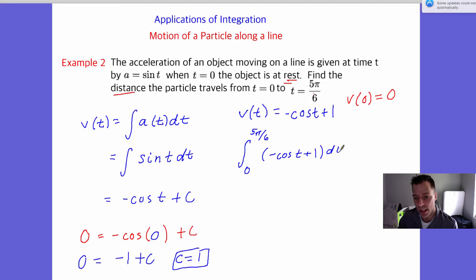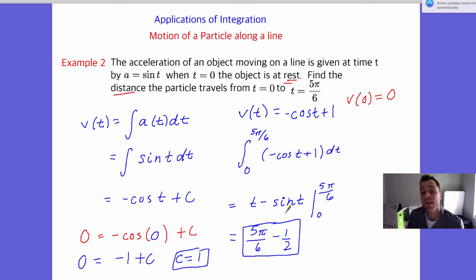Now, negative cosine of t plus one is greater than zero from zero to five pi over six. Think of the unit circle. So I don't need absolute value bars here. So when I integrate this, I get t minus sine of t. And I have to evaluate that from zero to five pi over six. When I do, I get five pi over six minus one half. And that's the total distance traveled. So that's a couple of examples when a particle moves along a line finding the total distance traveled by the particle.